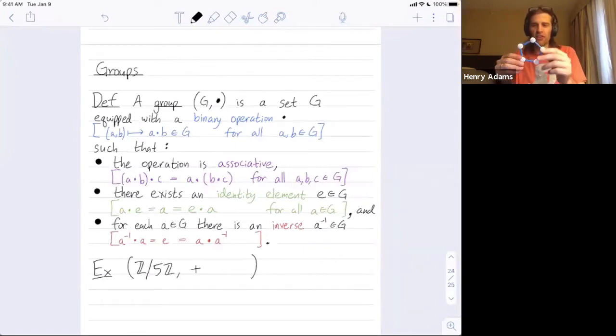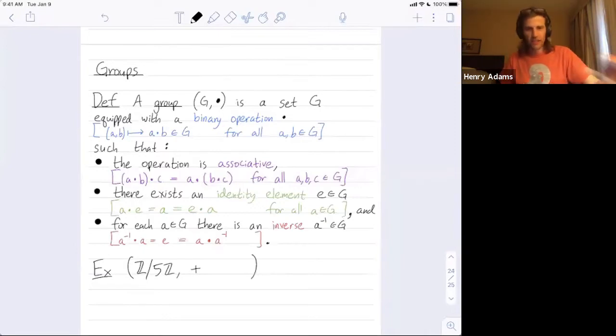Notice that taking three steps is no different than just taking negative two steps. That group that I just described, the planar rotations of this regular pentagon, is no different than the group I'll write down: Z mod 5Z under addition. And this is really addition mod, or modulo 5.